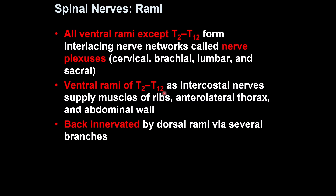Those ventral rami between T2 and T12 do not make any plexuses. What they make instead are intercostal nerves, and these intercostal nerves supply the anterior and lateral parts of the chest and abdomen — both sensory and motor.